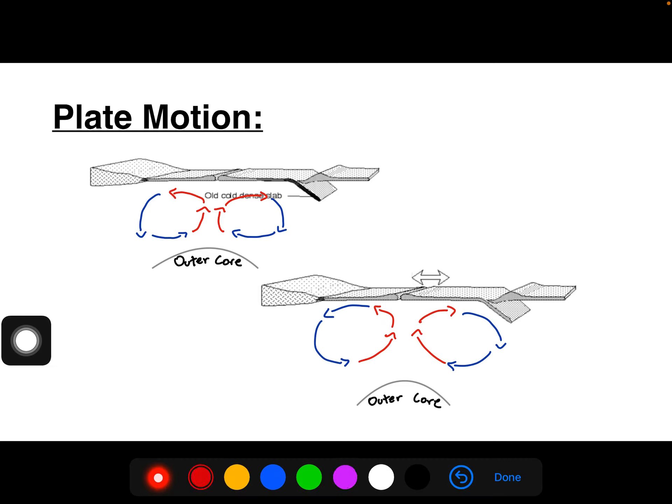We know from our discussion, the red is that warm, rising mantle material created from the heat within the core. It rises up because it becomes less dense as it gets more and more heat from the core.